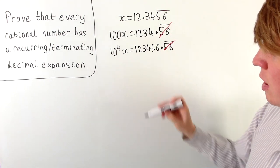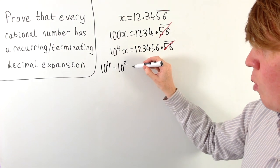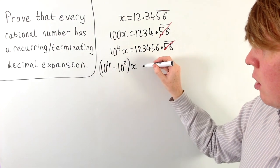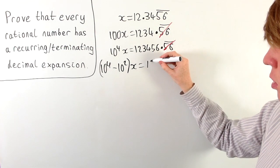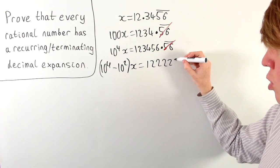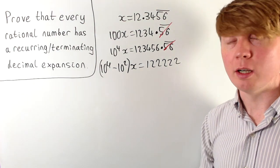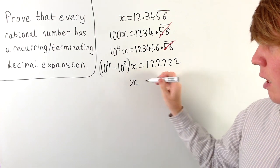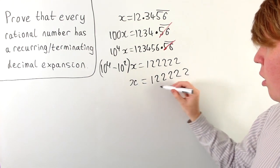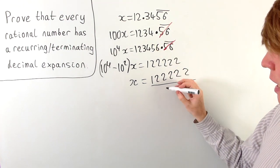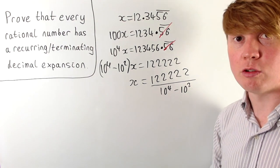So the recurring part will disappear and you get 10 to the 4 minus 10 squared times x, which is equal to 123456 minus 1234. So you get 1222222 as our answer here with no recurring part. Then if we divide both sides by 10 to the 4 minus 10 squared, we've expressed our number x as a fraction with integer numerator and denominator.